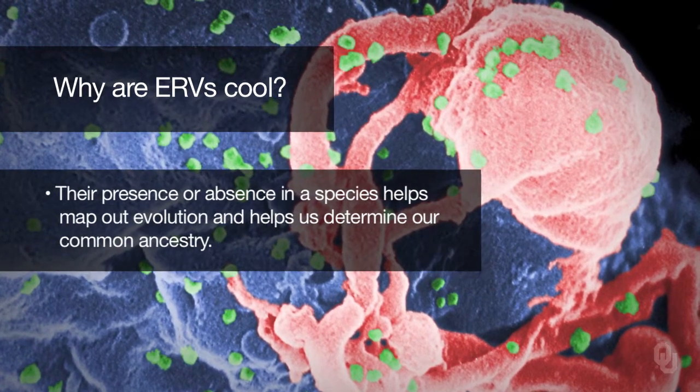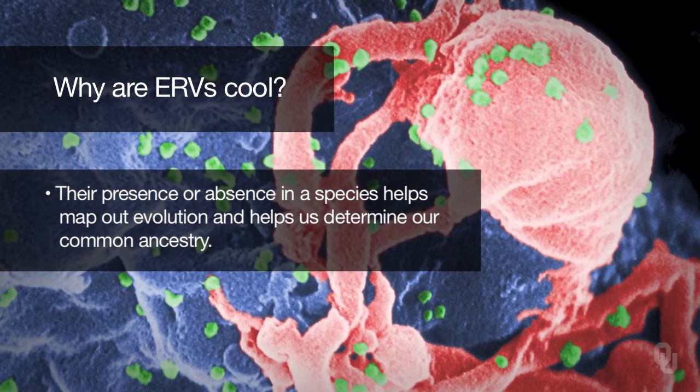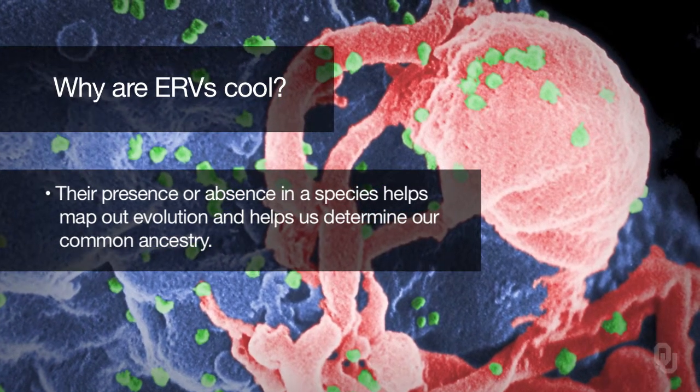They don't appear to be active viruses anymore. What is extremely cool about ERVs is that their presence or absence among species maps out evolution and common ancestry quite beautifully. For example, if an ERV event occurred in the most recent common ancestor of humans and chimps, we would expect to still see that ERV in both humans and chimps, but not the other primates. And because it reflects a single insertion event, we'll see that ERV at the same genetic position in both humans and chimps.